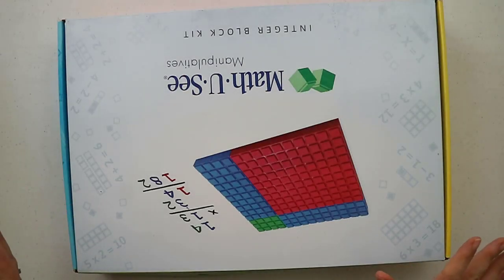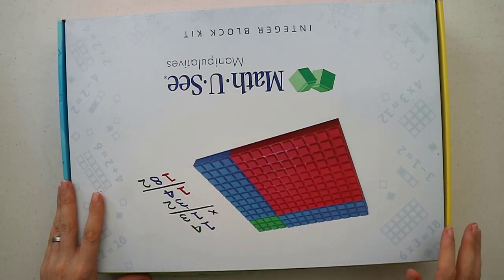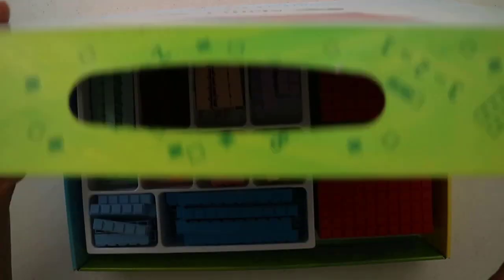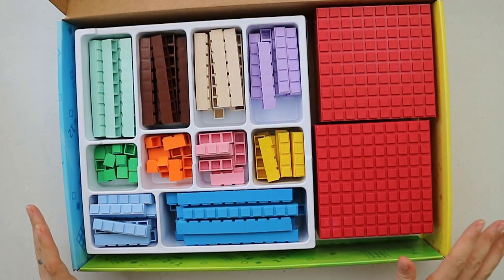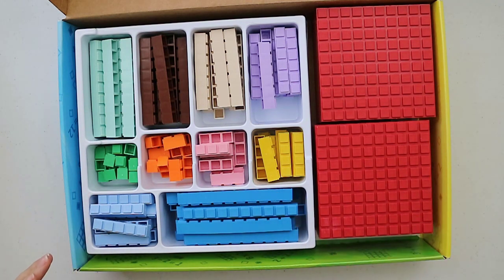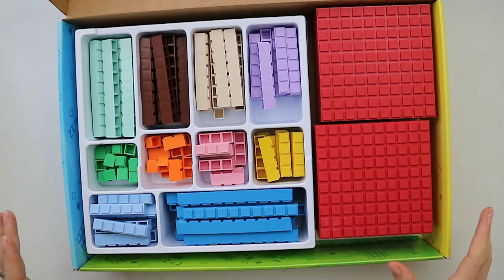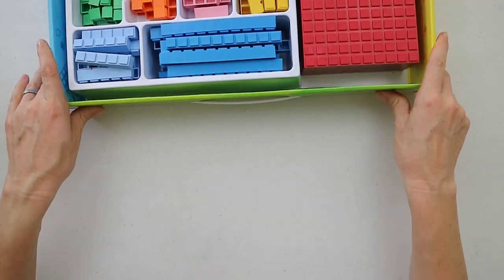We'll start with the blocks because the blocks are really the core of the whole thing. It's Math-U-See so you need to be able to see it. You get them in this pretty good box which we also use as a storage box. You've got blocks for every number, one through ten, and they're all different colors which is pretty important in the teaching of it.